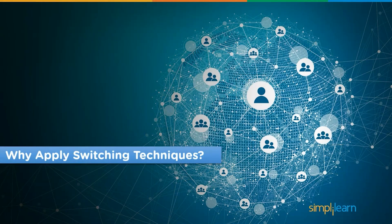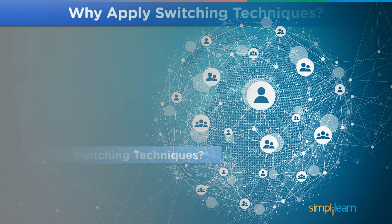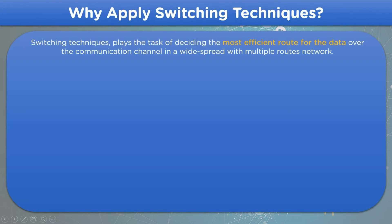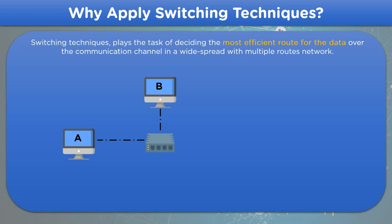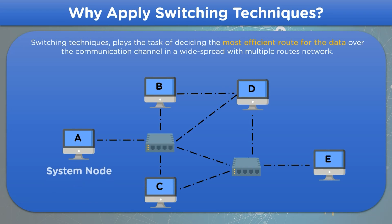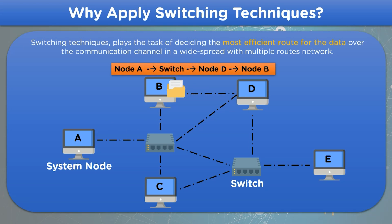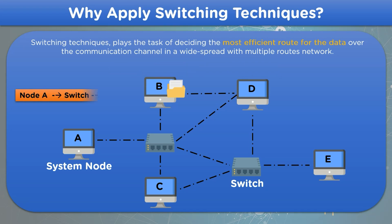Next we will look into why to apply these switching techniques. Using switching techniques, we can choose the best and most efficient route for data transfer in the network. For example, if we want to send data from node A to node B, we could go from node A to a switch, then node D, then to node B — but that seems too long. Using switching techniques, we can choose the smallest and most efficient way: node A to switch, then directly to node B.